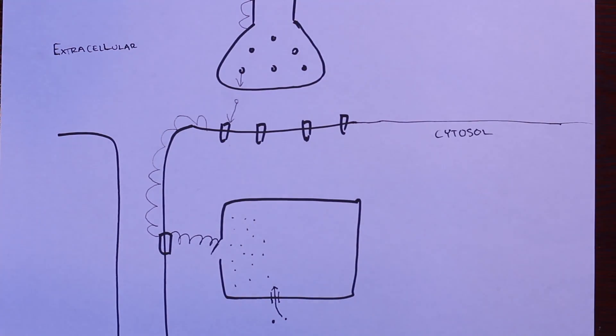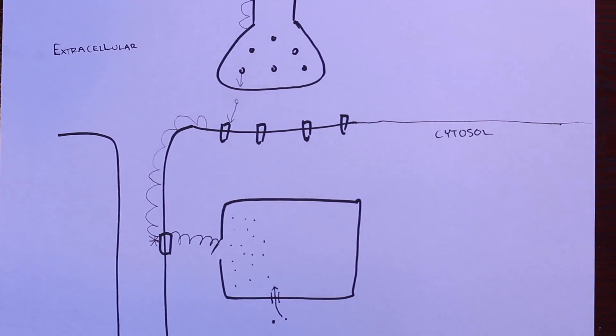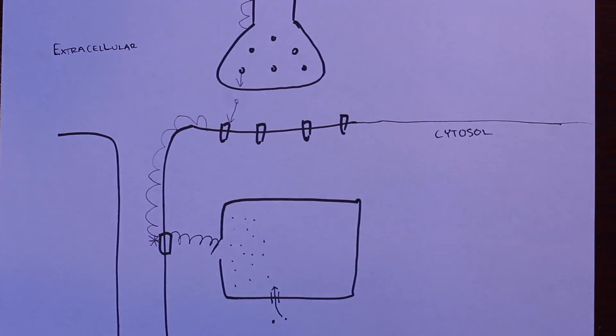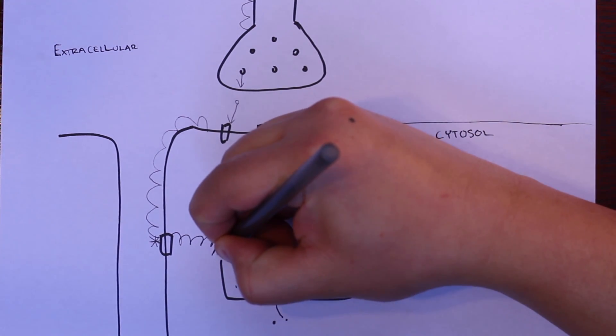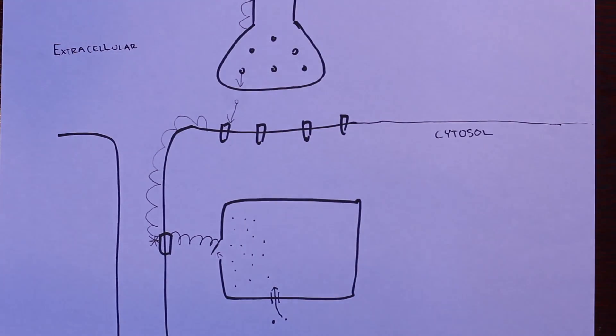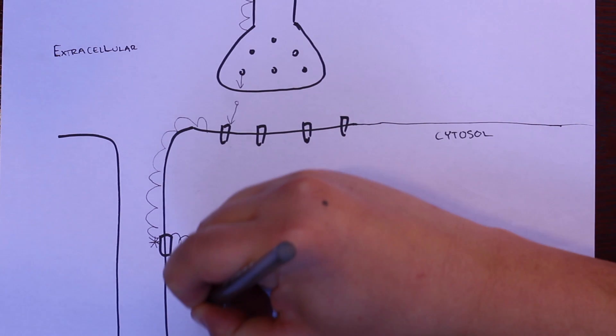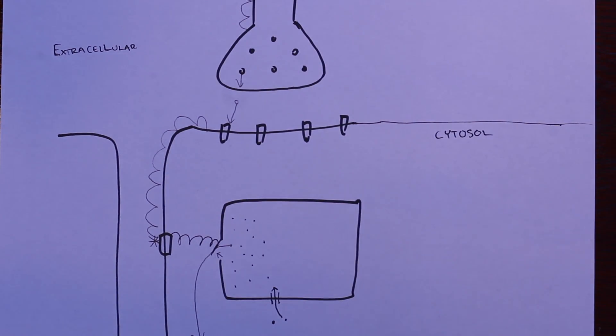As it comes down the T-tubule, it's going to run into our DHP receptor. What happens here is DHP is physically connected to our ryanodine receptor. When stimulated, it causes that ryanodine receptor to swing open like a door, which allows calcium to migrate out of the sarcoplasmic reticulum and into the cytosol.